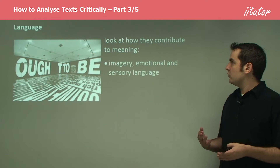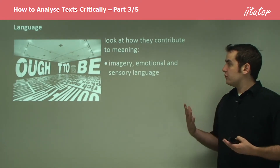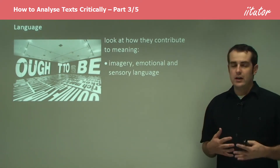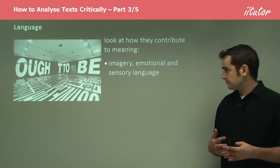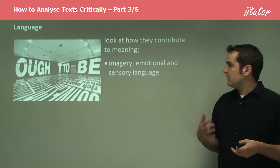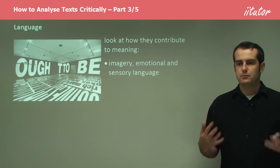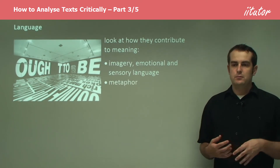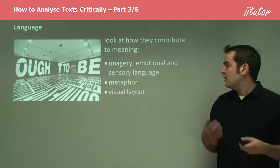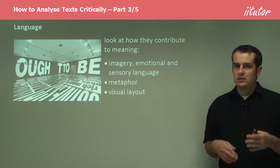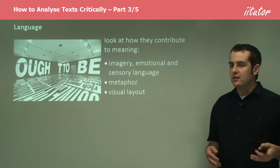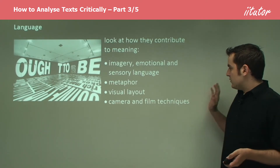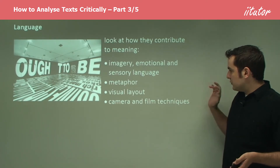Some of the things to look for are emotional imagery, sensory language — basically language which creates a sense of mood and atmosphere. Metaphor is another one, particularly an interpretive one. Visual layout is important, especially if you're looking at a film or a visual text. Camera and film techniques are similarly important alongside visual layout.